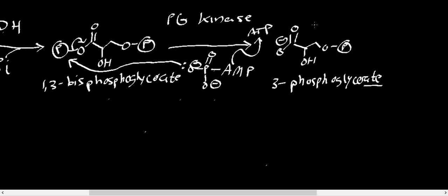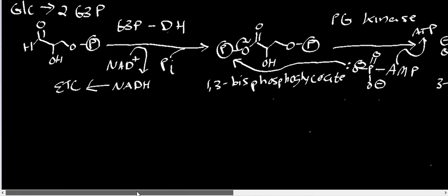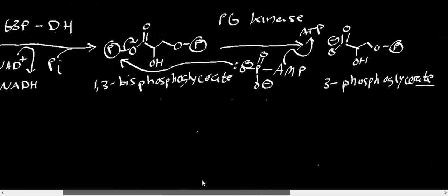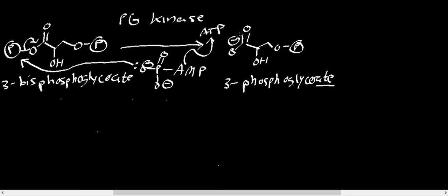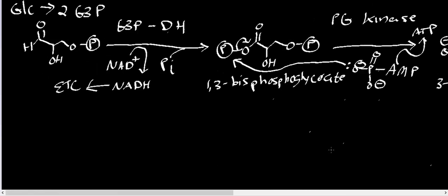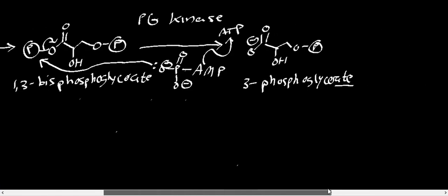Notice that one glucose yields two G3P, so there are two of all of these reactions happening. Right now we have generated 2 ATP total here, which basically makes up for the 2 ATP we burned in the preparatory phase.